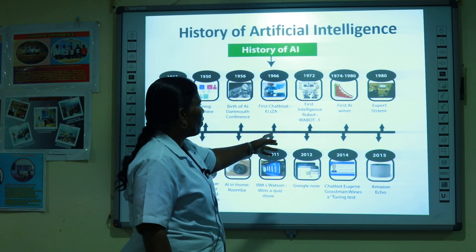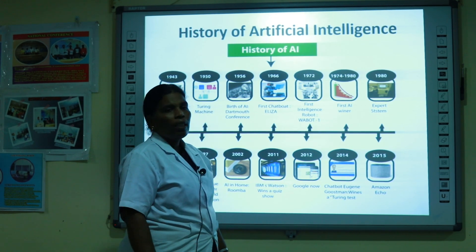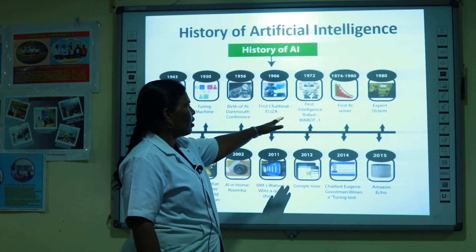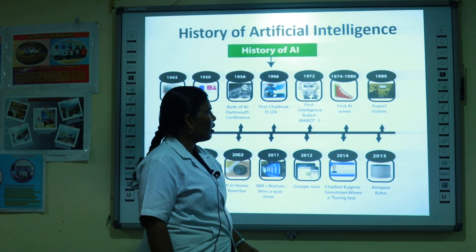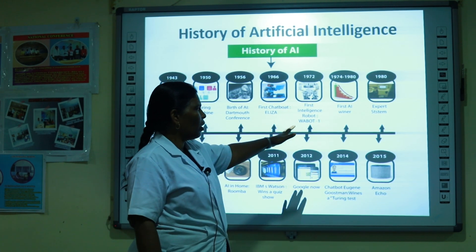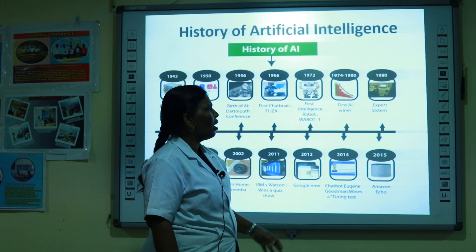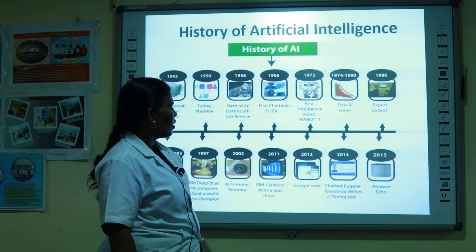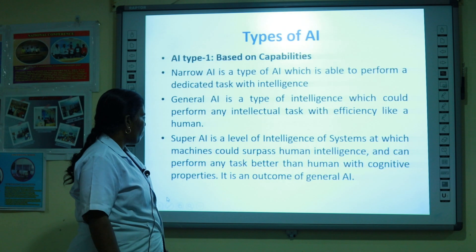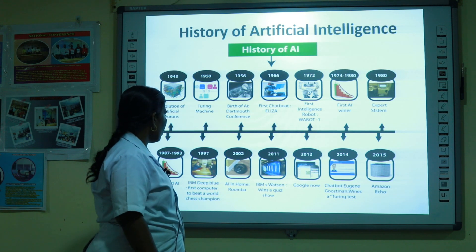In 1972, the first intelligent robot named WABOT-1 was implemented. During the first AI winter, a conference was conducted from 1974 to 1980, during which the AI systems were not executed successfully. Further development was done in 1980 with the expert system. The second AI winter conference was conducted from 1987 to 1993.